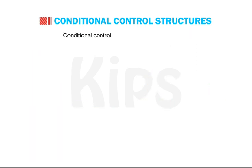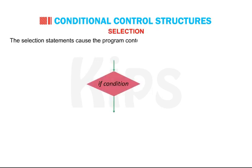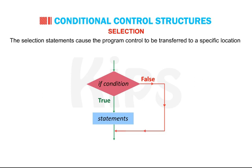Conditional Control Structures are categorized as Selection. The selection statements cause the program control to be transferred to a specific location depending upon the outcome of the conditional expression.